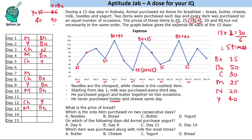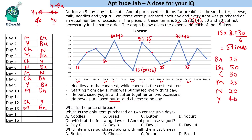Day 6's total is 70. 70 is possible only with 50 plus 20, so that is noodles plus butter. Day 7 is already milk plus noodles (25+20=45). Day 11 also totals 70, which is again 50 plus 20 — noodles and butter.